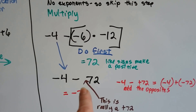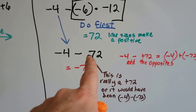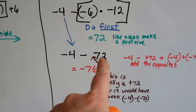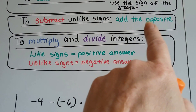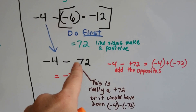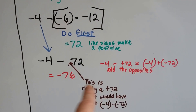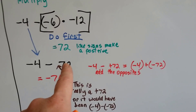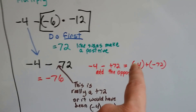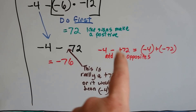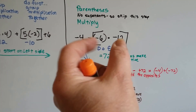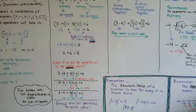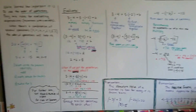Now we have positive 72 and we've got negative 4 minus 72. This is a positive 72 — if it were negative it would be negative 4 minus negative 72. So we are subtracting a positive. When you subtract unlike signs, you add the opposite: instead of subtracting positive 72, we add negative 72. We change the sign and put negative 72 in parentheses. Now we have negative 4 plus negative 72, which is negative 76. Group similar operations and don't mistakenly group a multiplication with an addition.